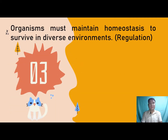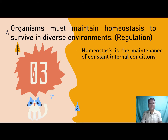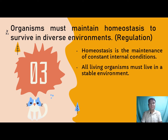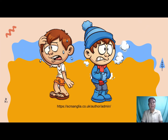The third unifying theme is regulation — organisms must maintain homeostasis to survive in diverse environments. Homeostasis is the maintenance of constant internal conditions. All living organisms must live in a stable environment. The different organ systems help control the internal environment and maintain normal processes such as heart rate, body temperature, and fluid environment of cells. When it is warm, skin pores open to release sweat to cool down; when it is cold, skin pores close to conserve heat. Different organ systems work together to keep the organism alive.